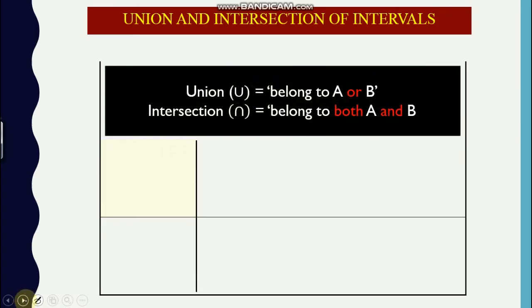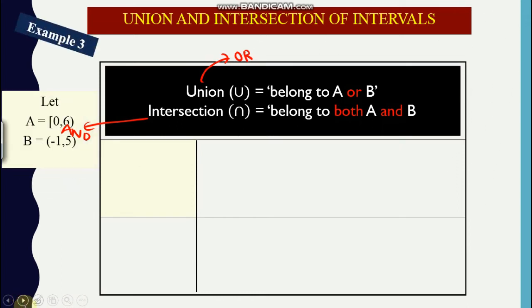What happens if you have union and intersection of intervals? So union means it belongs to A or B. Unions means or in a short explanation. Intersection means and.